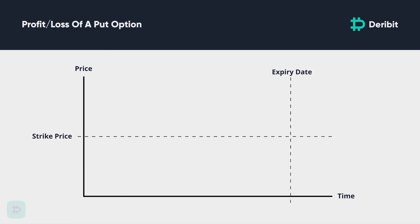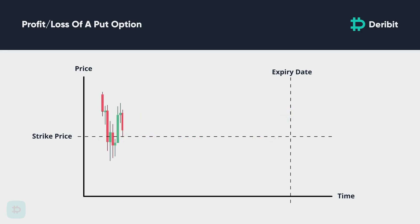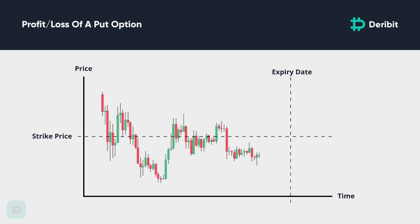Let's go through the profit and loss of a Bitcoin put option. For a put option, if the price expires above the strike price, then the option expires out of the money and therefore worthless. The buyer's only loss is the premium paid to purchase this contract, and of course the buyer's loss is the seller's profit. However, if the asset price expires below the option strike price, this option is in the money and has value. The seller is then required to pay to the buyer the difference between the expiry price and the strike price.